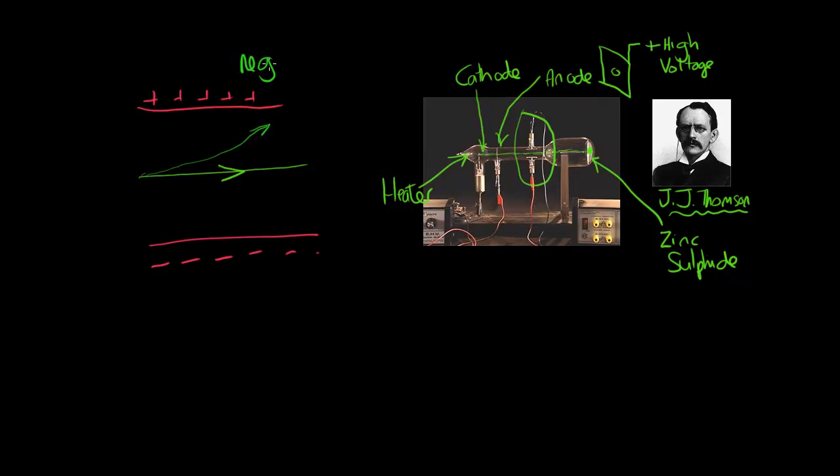And what's more, he was a bit cleverer than that because he put a magnetic field. He put the magnetic field at right angles. And what he was able to do was to balance the deflection of what we now know are electrons towards the positive, with the magnetic field which rebalanced and deflected the already deflected cathode ray back to the center.